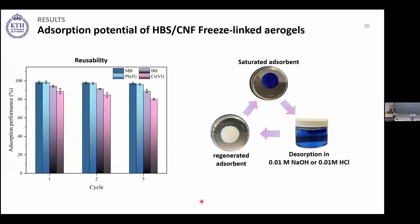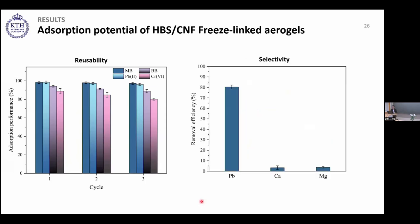Reusability was tested as an important parameter from both economic and environmental perspectives. After each adsorption cycle, cationic contaminants were desorbed using 0.01 M HCl solution, and anionic contaminants using 0.01 M NaOH. This cycle was repeated three times; aerogels retained more than 95% of adsorption capacity for cationic contaminants and around 85% for anionic contaminants. Additionally, the selectivity of aerogels for lead in the presence of calcium and magnesium as background ions was tested, and the aerogels showed significant selectivity for lead.